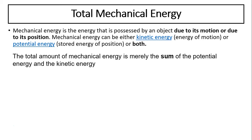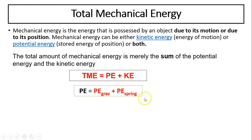The total mechanical energy is the sum of potential and kinetic. So TME, Total Mechanical Energy, equals PE plus KE. This PE can be the sum of two: gravitational and elastic.